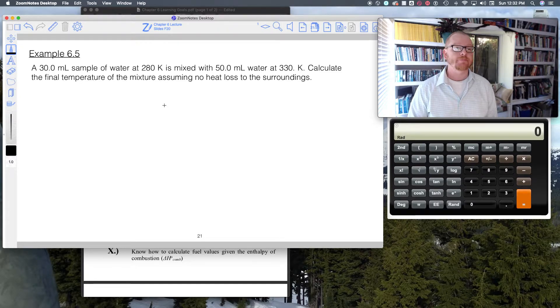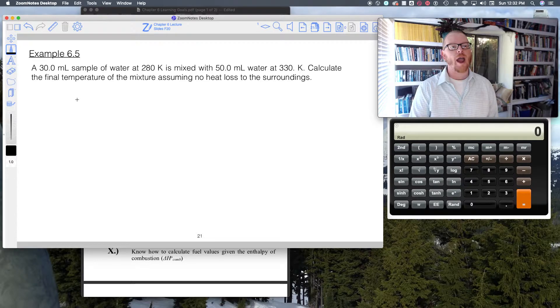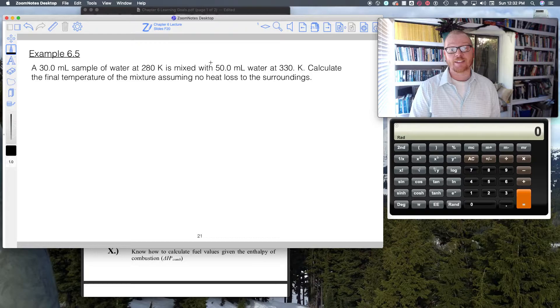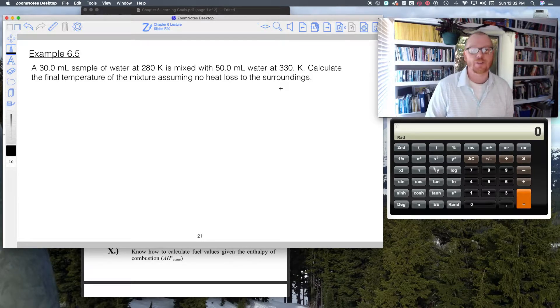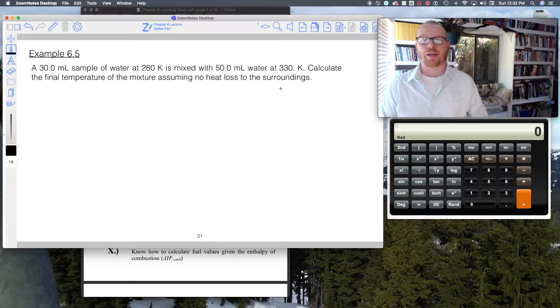Let's do another sample problem. A 30 milliliter sample of water at 280 Kelvin is mixed with a 50 milliliter sample of water at 330 Kelvin. Calculate the final temperature of the mixture, assuming no heat loss to the surroundings.